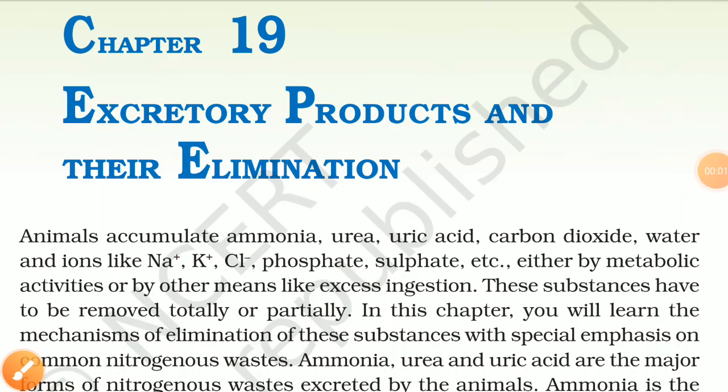Chapter 19: Excretory Products and Their Elimination. Animals accumulate ammonia, urea, uric acid, carbon dioxide, water, and ions like Na+, K+, Cl-, phosphate, sulfate, etc., either by metabolic activities or by other means like excess ingestion. These substances have to be removed totally or partially. In this chapter, you will learn the mechanism of elimination of these substances with special emphasis on common nitrogenous waste.